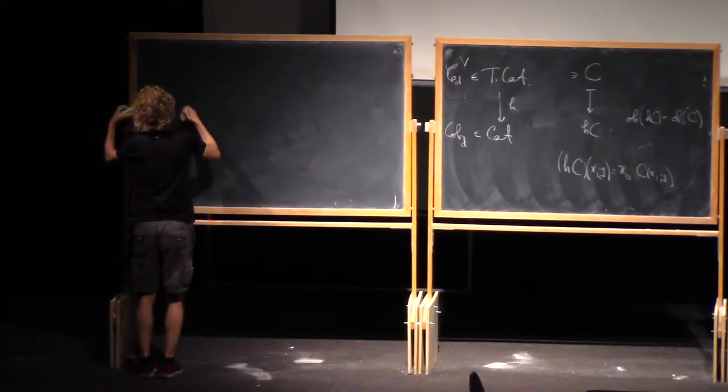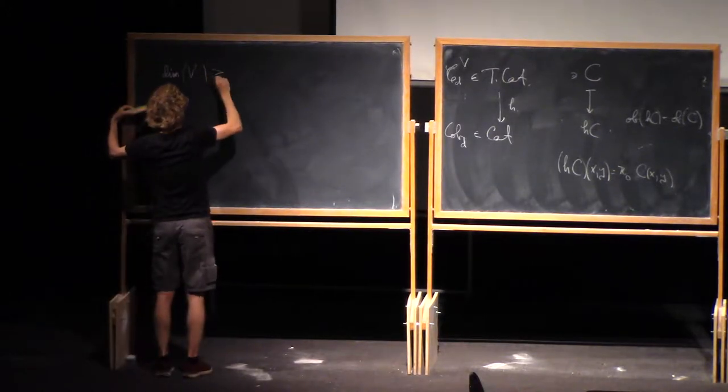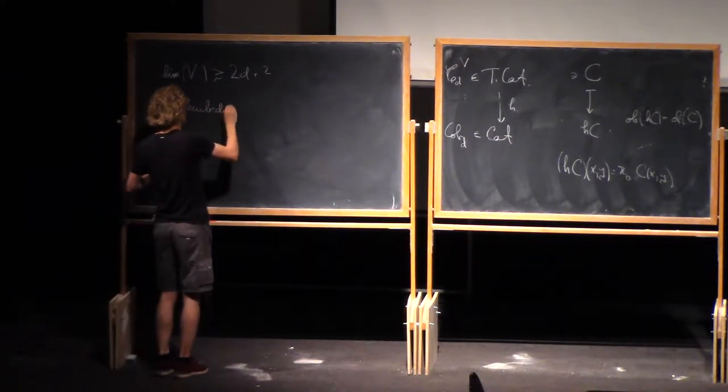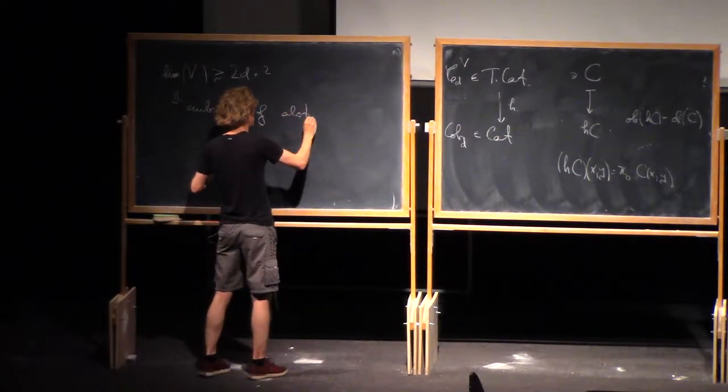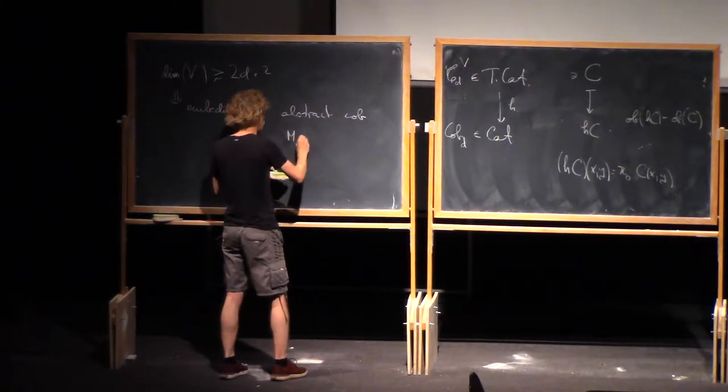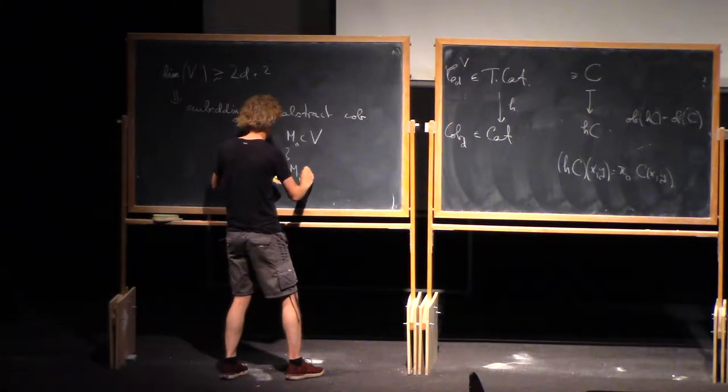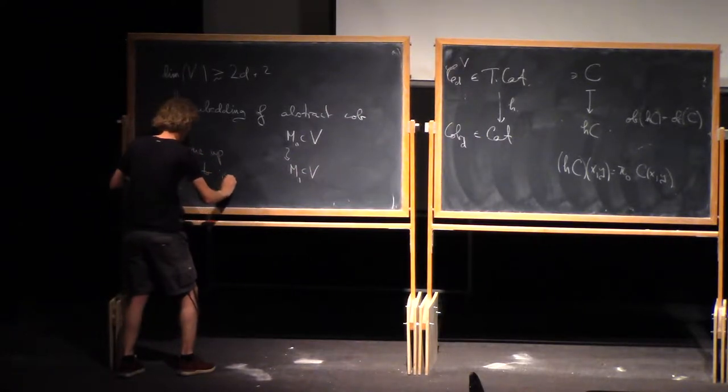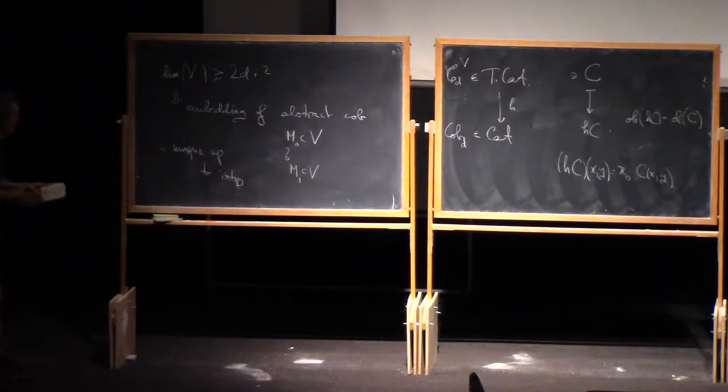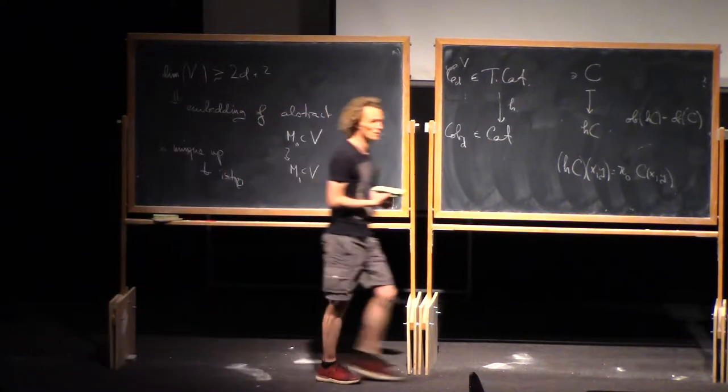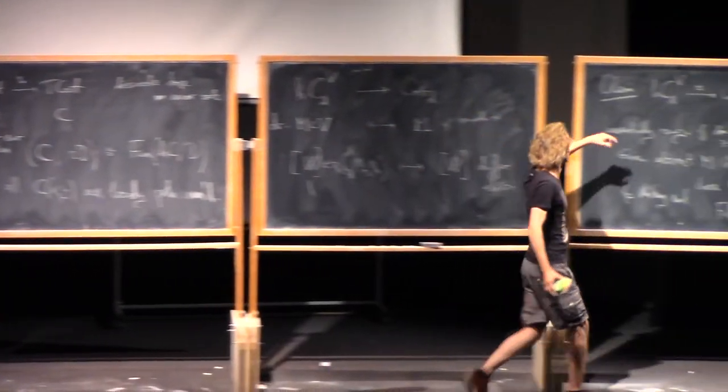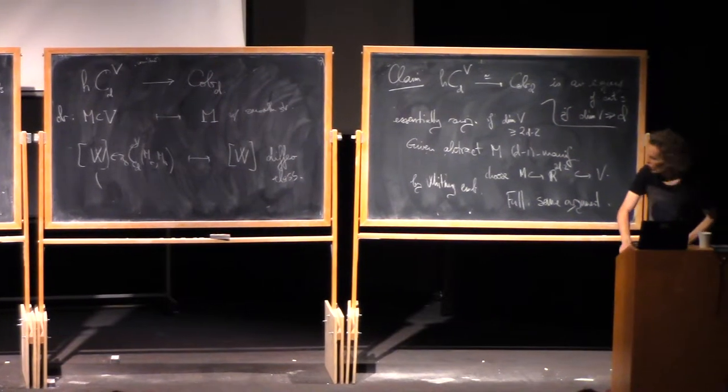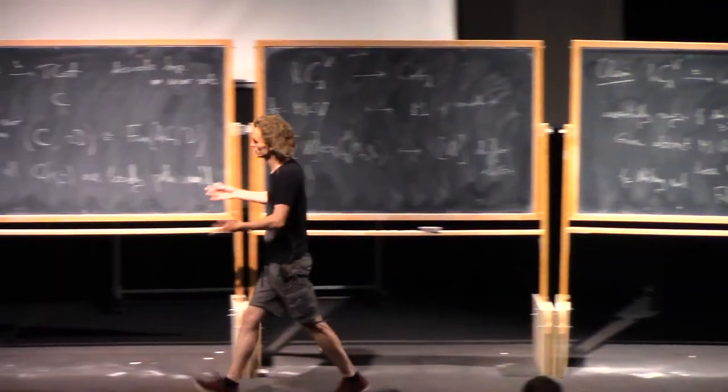And a fancy version of the Whitney embedding theorem also tells you that the embedding space is connected provided the dimension of V is high enough. So probably something like 2d+2 or something. Embedding of an abstract cobordism between two embedded things. This is unique up to isotopy. We pick two embeddings, there's a path of embeddings between them.